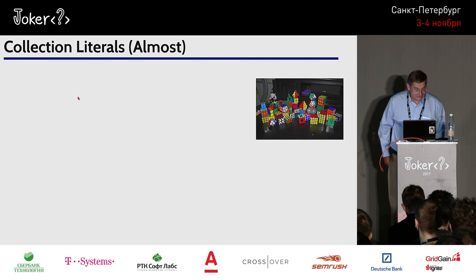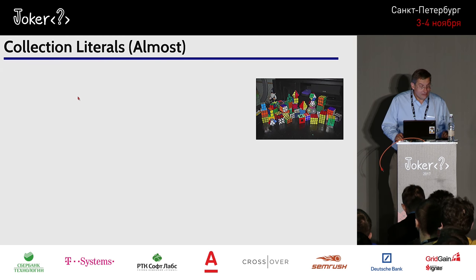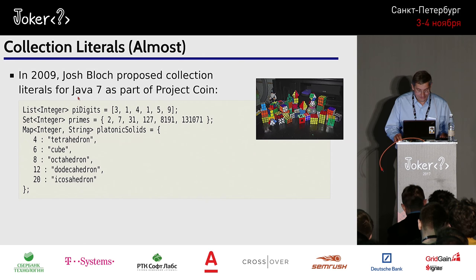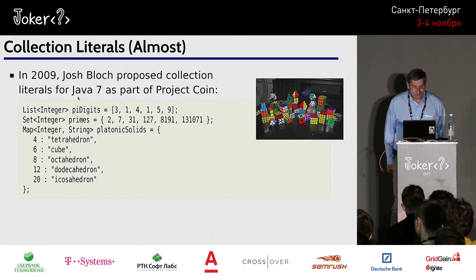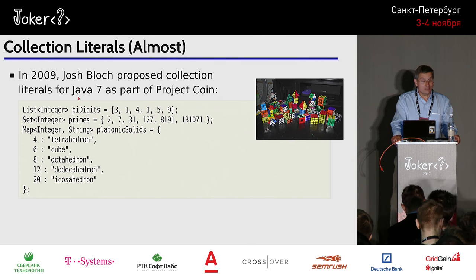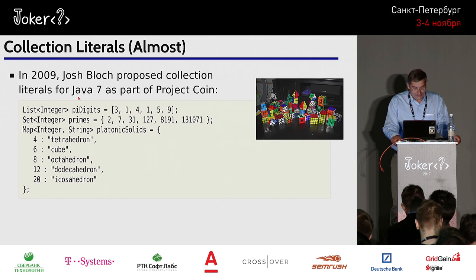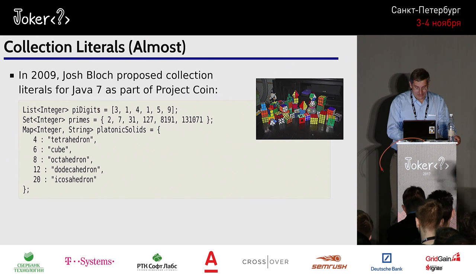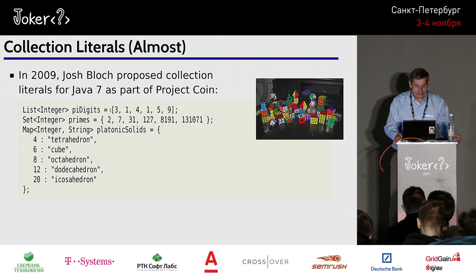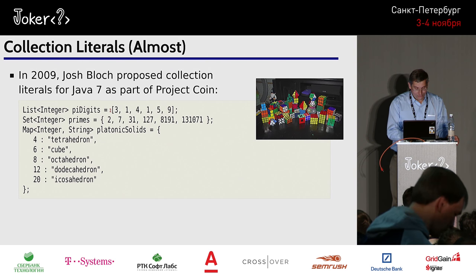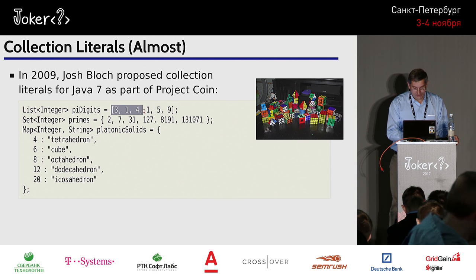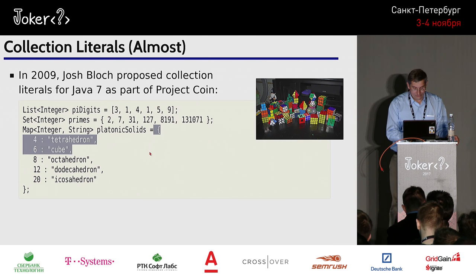I've been looking at the Java API for a long time and there are always things that you want. In 2009, Josh Bloch proposed putting collection literals into Java 7 as part of Project Coin. He said it's a shame that, unlike real programming languages, Java doesn't have any way of making set and map literals. He proposed a pretty syntax with literal lists, sets, and maps.